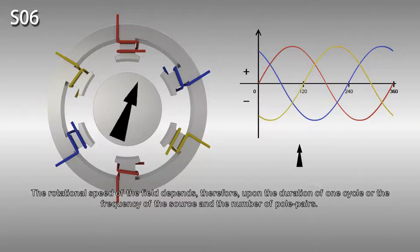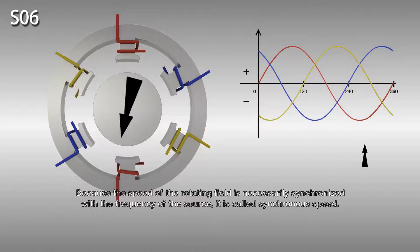The rotational speed of the field depends, therefore, upon the duration of one cycle or the frequency of the source, and the number of pole pairs. Because the speed of the rotating field is necessarily synchronized with the frequency of the source, it is called synchronous speed.